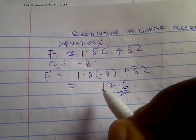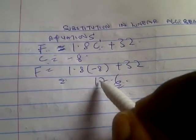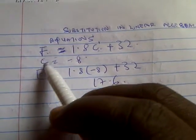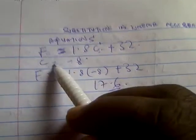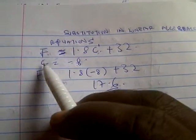You just have to bear in mind that when you are given this, go to where you see that particular symbol or alphabet and substitute the figure there. For example, C equal to minus 8, you go to where you're seeing C and put minus 8 there.